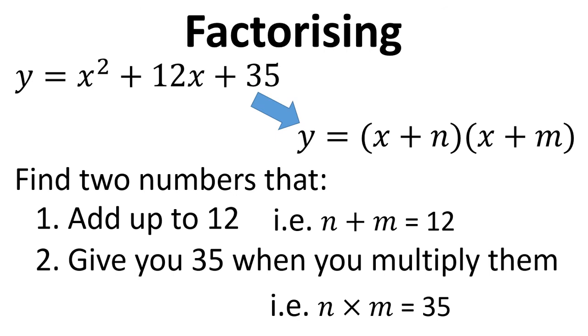And in this case, the two numbers that would do this would be 5 and 7. So this is just a neat way of thinking about this, and a way of thinking about how to factorise.